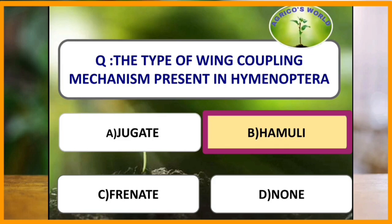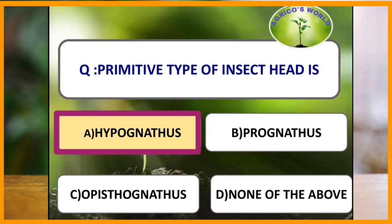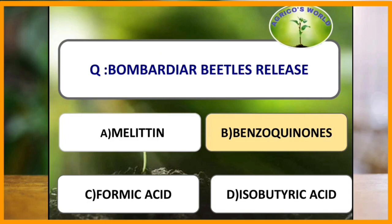Primitive type of insect head is hypognathous type. In hypognathous type of head, the head remains vertical and is at right angle to the long axis of the body and the mouthparts are ventrally placed and projected downwards. This is also known as orthopteroid type. Bombardier beetles release which chemical? Bombardier beetles release benzoquinones.